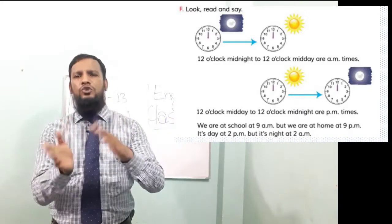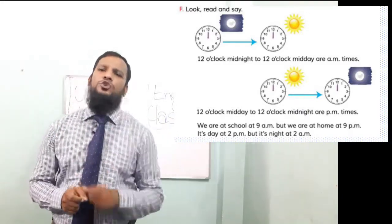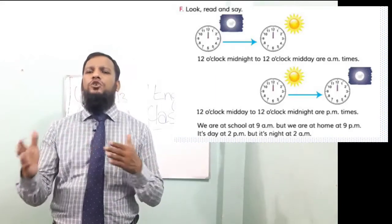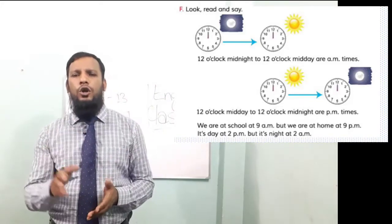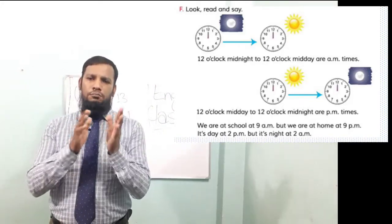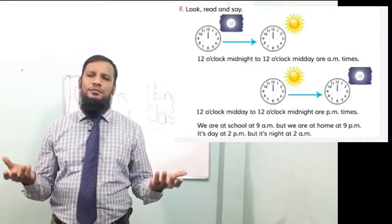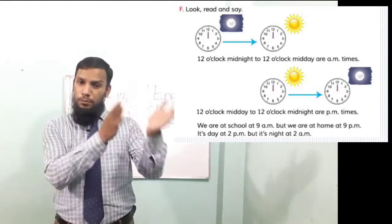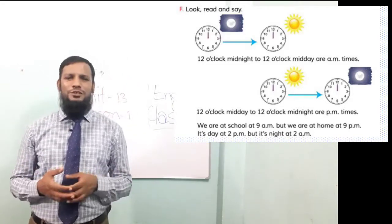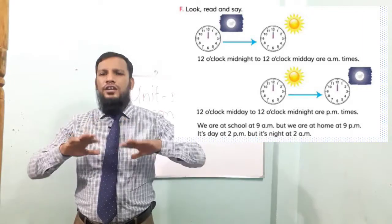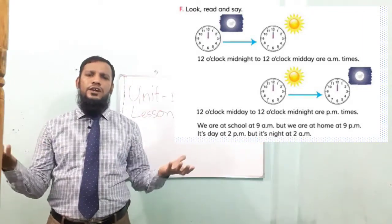Twelve o'clock midnight to twelve o'clock midday are a.m. times. And twelve o'clock midday to twelve o'clock midnight are p.m. times. We are at school at 9 a.m.